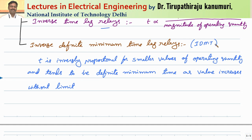That is why the relay should wait for two or three cycles before responding to a fault, which is why we always go for inverse definite minimum time lag relays. The inverse characteristic is justified because the severity of a fault depends on I-squared-R loss, heat produced, and forces between adjacent conductors — all proportional to the magnitude of fault current. If the fault magnitude is more, the severity is more and it should be disconnected as early as possible.